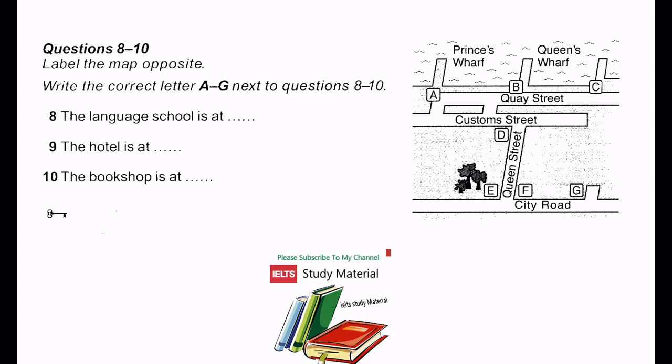And what about accommodation? Well, I've booked you into a hotel for the first three nights and then the accommodation officer will find you a family to live with. Good. And where's the hotel? It's a short walk from the college, on the corner of Queen Street and City Road. Which corner, exactly? On the left-hand side, as we're looking at the map. OK, near the little park? Yes, that's right. And what about a good bookshop? I'm going to need to buy a dictionary and some English books. Yes, well, I believe there's a really good language bookshop on the corner of Customs Street and Queen Street. It's near the college, so that's pretty convenient. Thank you so much, you've been really helpful.